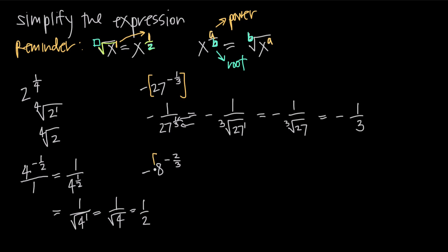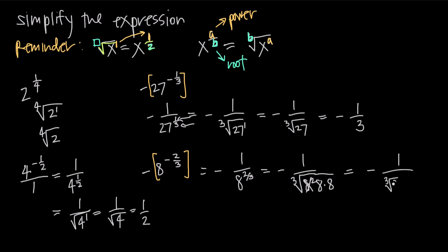For the last example, we ignore the negative sign out in front and deal with 8 to the negative 2/3. We make it positive by moving it to the denominator, giving us negative 1 over 8 to the positive 2/3. The numerator becomes the power and the denominator becomes the root, so this is negative 1 over the third root of 8 squared. Since 8 squared is 8 × 8 inside the radical, we can split it into the third root of 8 times the third root of 8. The third root of 8 is 2, because 2 × 2 × 2 = 8. So we get negative 1 over 2 × 2, which is negative 1/4.